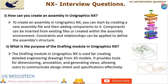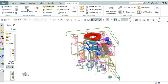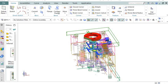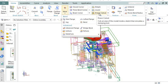It enables the creation of orthographic views, section views, exploded views, bill of materials (BOM), and other essential elements required in the manufacturing and documentation process. Next point is number 5. How does UniGraphics support sheet metal design? UniGraphics NX provides specialized tools for sheet metal design, including features for creating bends, flanges, and cutouts. It also supports unfolding and flat pattern generation for manufacturing purposes, ensuring accurate representation, efficient manufacturing, and effective communication of sheet metal components.